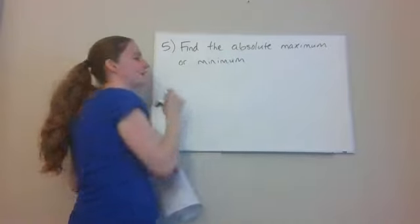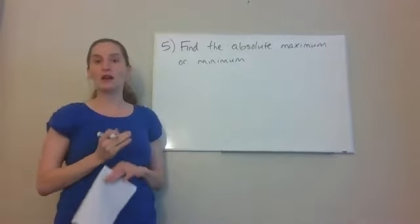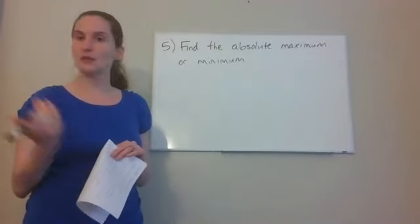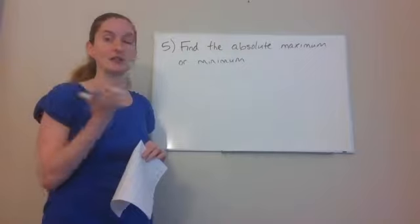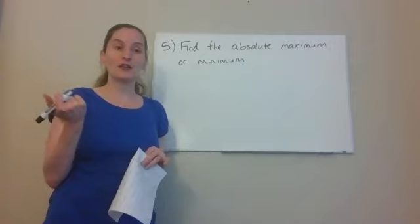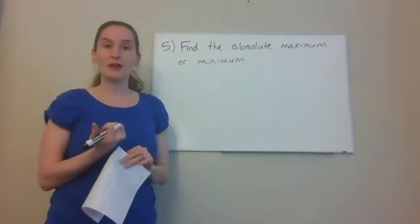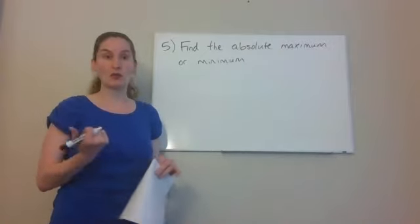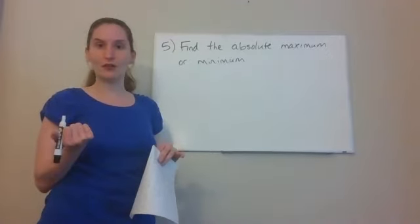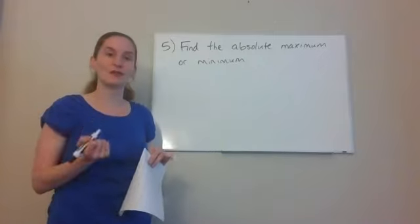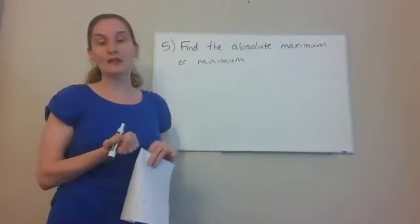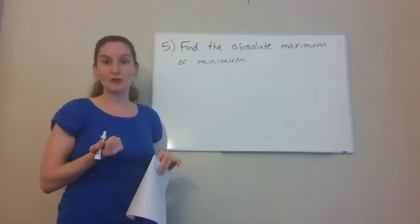That last step takes a while because it involves finding critical values by taking the derivative and setting it equal to zero, then figuring out if those critical values correspond to a maximum or minimum — either by checking the signs of the derivative on either side of the critical value to see if it switches from increasing to decreasing or vice versa, or by using the second derivative test.